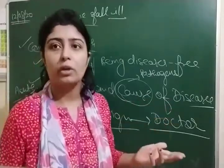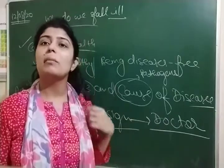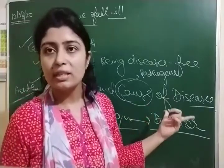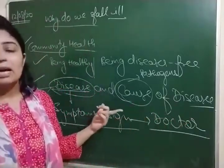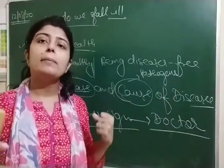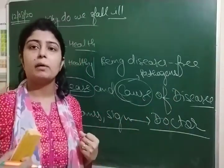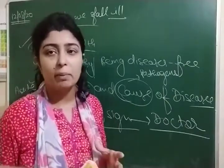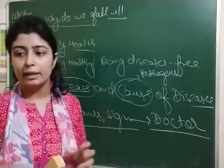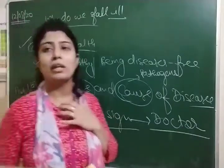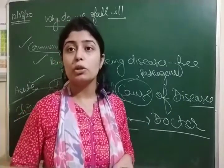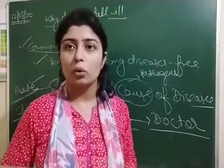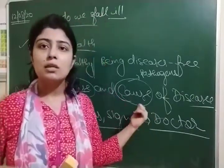Besides heredity and genetic disorder — sometimes some diseases come from heredity or genetic disorder. Also, lack of proper immunization: if our body's immunity is weak, we suffer from bacteria and get disease frequently. Environmental pollution is also very important — because of pollution in the air, water, and soil, disease is spreading day by day. So these are the causes of disease.